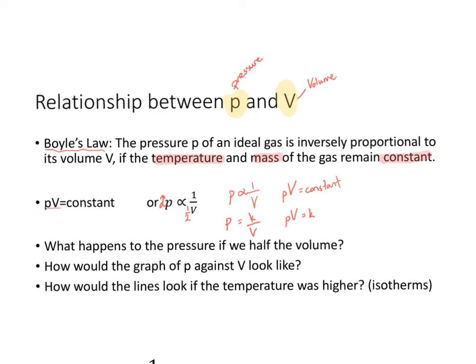If I double the pressure — two times the pressure — in order to keep k the same, you'll have to halve the volume, or if you halve the volume, you double the pressure. As a graph, since they're inversely proportional to each other, it's not a straight line — it will be a curve.